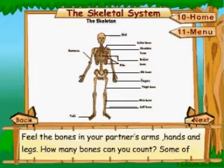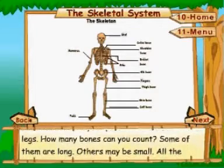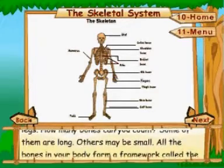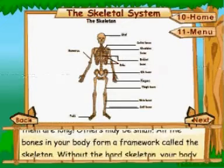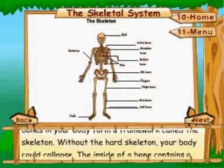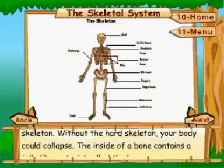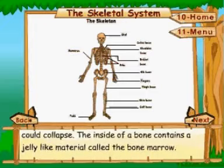The skeletal system. Feel the bones in your partner's arms, hands, and legs. How many bones can you count? Some of them are long, others may be small. All the bones in your body form a framework called the skeleton. Without the hard skeleton, your body could collapse. The inside of a bone contains a jelly-like material called the bone marrow.